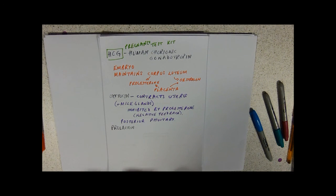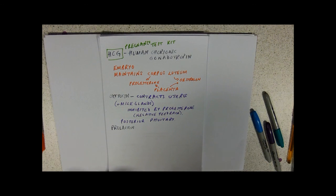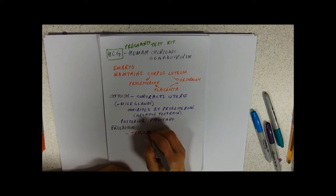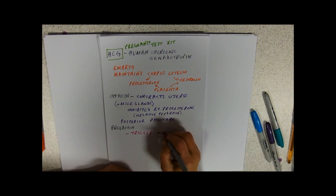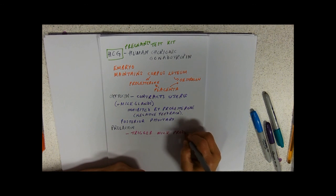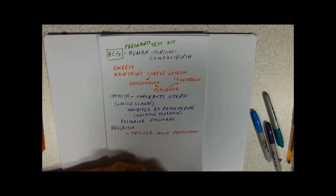After birth, obviously you're going to be needing to produce milk to feed your infant mammal. And prolactin is the hormone in charge of that. So this is going to trigger milk production. Really towards the lead up towards childbirth, we're going to get the release of prolactin to start the mammary glands producing milk.